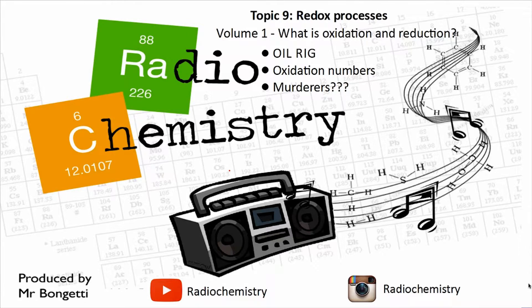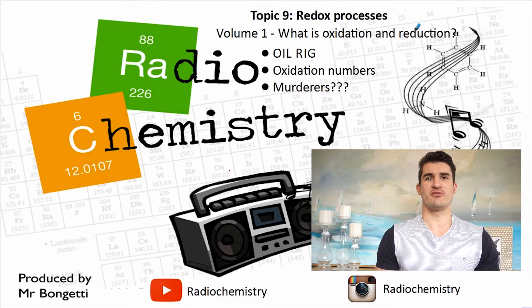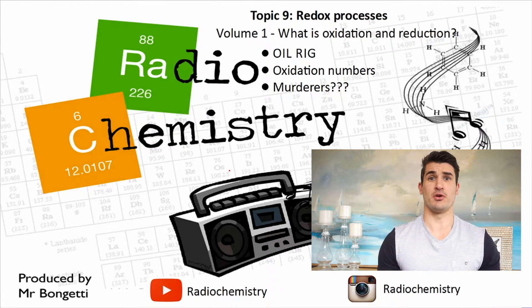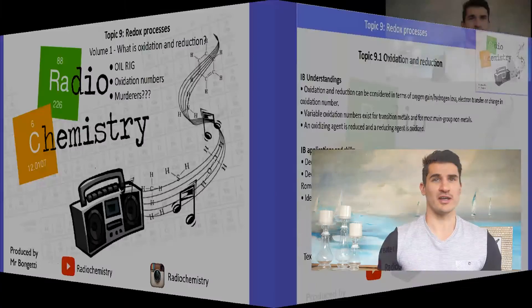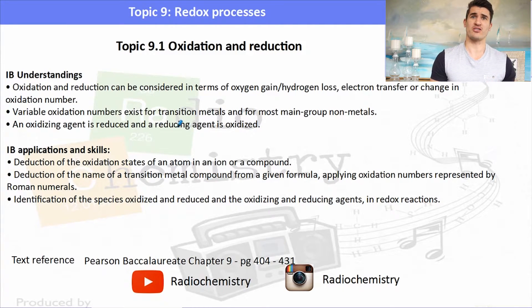Welcome to another video. This is Topic 9: Redox Processes, Volume 1 — What is Oxidation and Reduction? We look at OIL RIG, we talk about oxidation numbers, and then we discuss oxidizing and reducing agents. IB understandings, applications and skills focus around using oxidation numbers and being able to identify oxidizing and reducing agents.